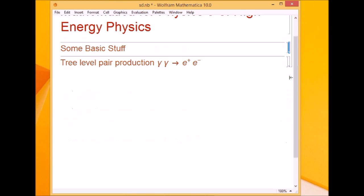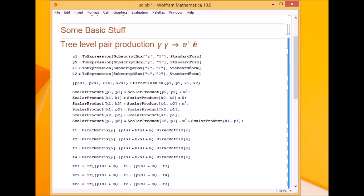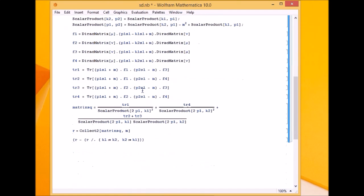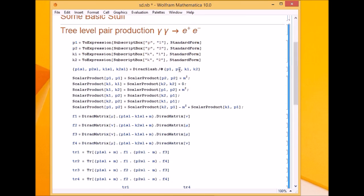Let me close it up. I'll show you the code of a calculation of an annihilation process. Two photons make an electron-positron pair, or vice versa. I've copied this whole code from the manual. I'll just execute it and briefly explain it.